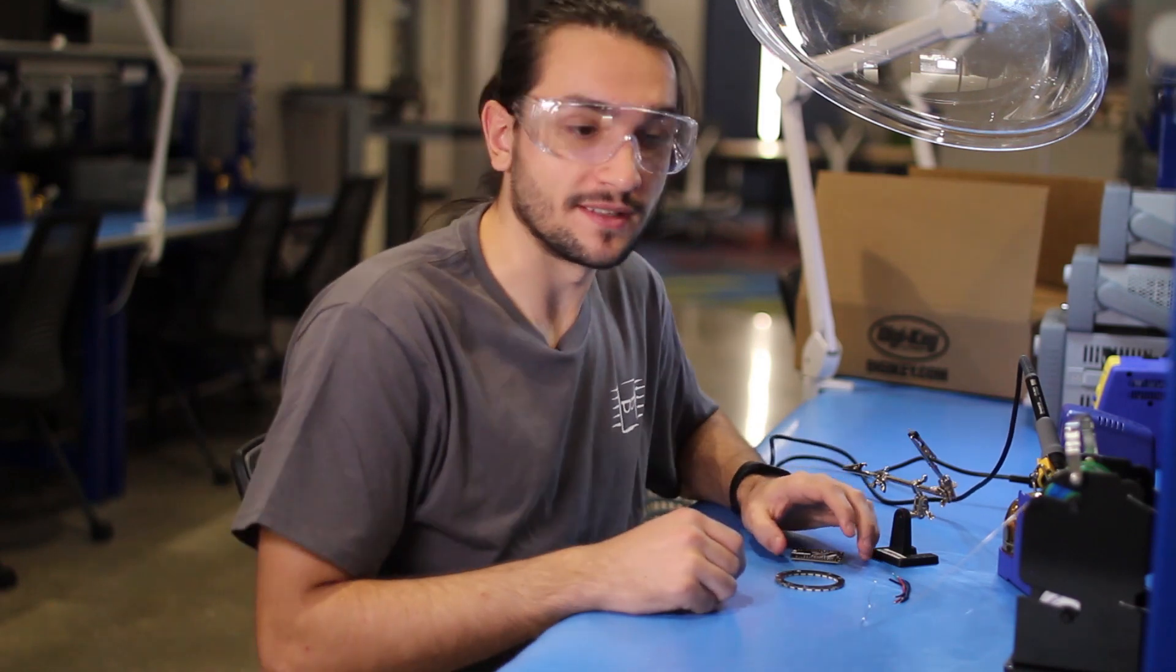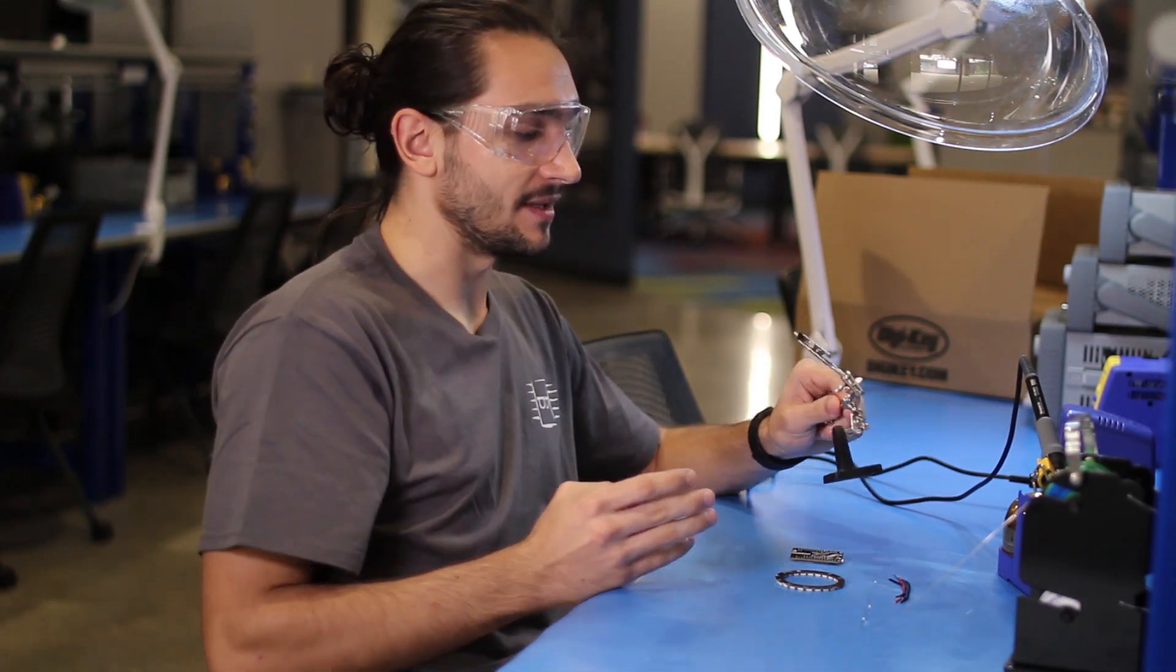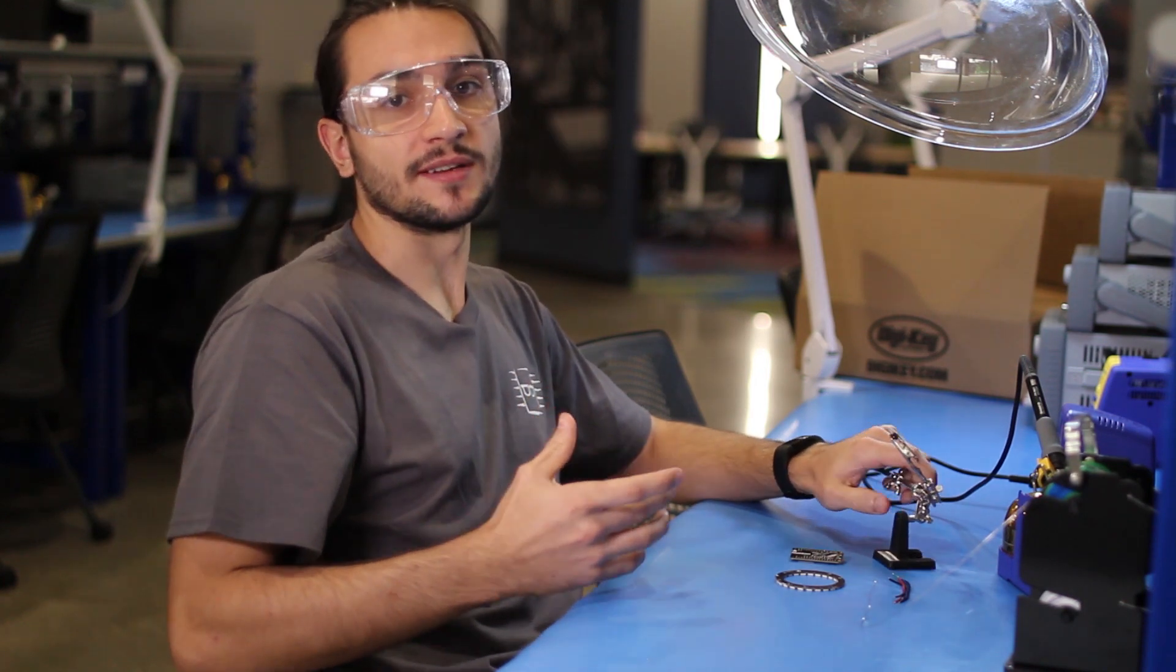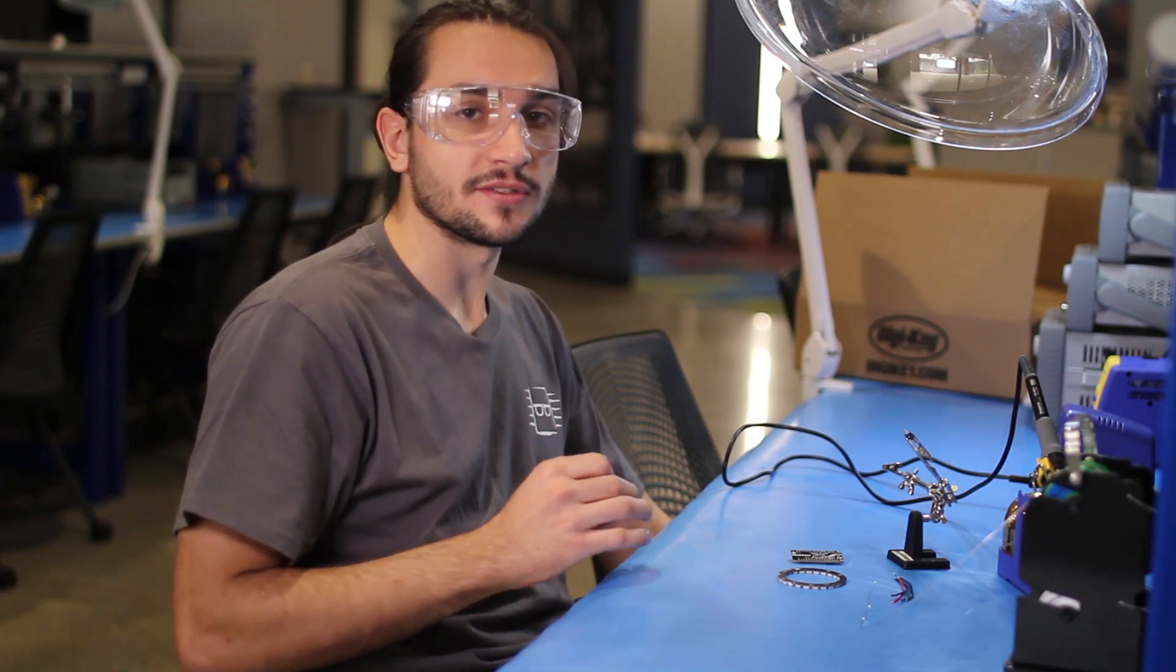So first off, when we solder this, we are going to start with the switch. The switch I have put on a clamp. Since it's super small, when you solder it, it will move around. The switch needs two wires, a ground wire and an enable wire. The enable wire connects straight to the feather to allow it to be turned on and off.